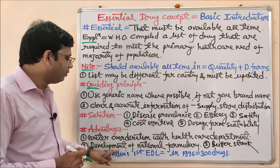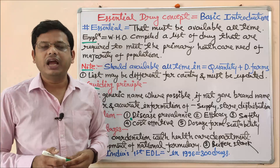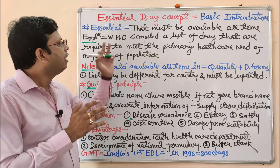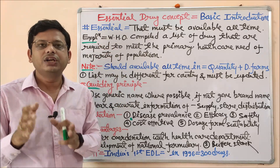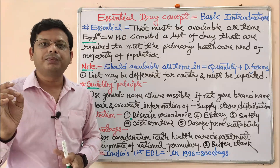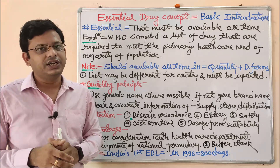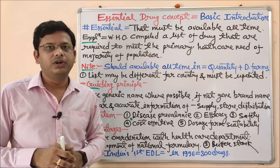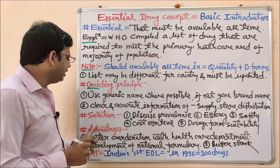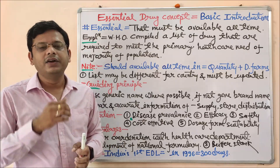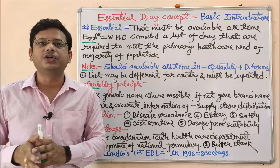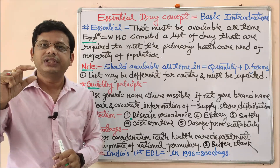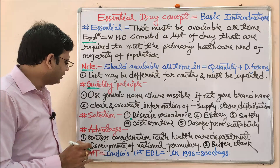Another advantage is the development of a national formulary. Every nation has its own formulary — a list of drugs that must be available in their state or country, which varies accordingly. This is called the national formulary. Additionally, the essential drug concept helps maintain buffer stock: every healthcare department must keep a minimum quantity of drug at any cost and at any time, and only then can they issue further quantities.